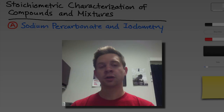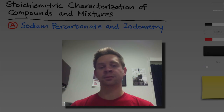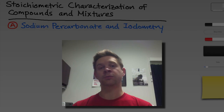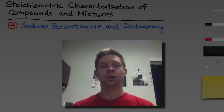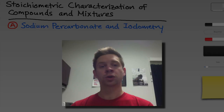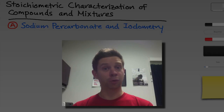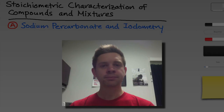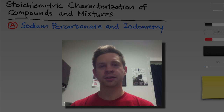In both parts, our focus is going to be on a reaction that's selective for one of the components, and we're going to use the balanced chemical equation for this reaction, as well as measurements of mass and volume, to work our way into the world of stoichiometry and the world of moles to determine interesting compositional properties of these compounds and mixtures.